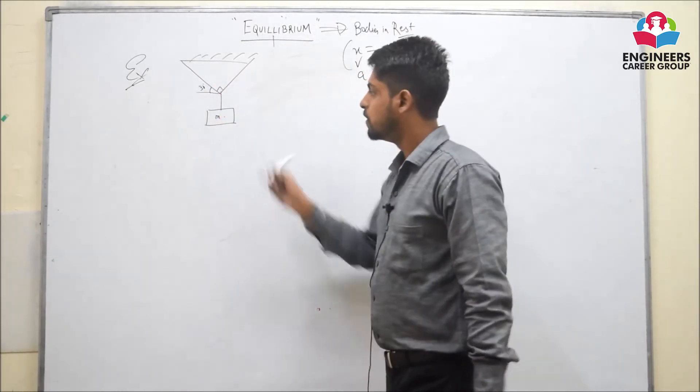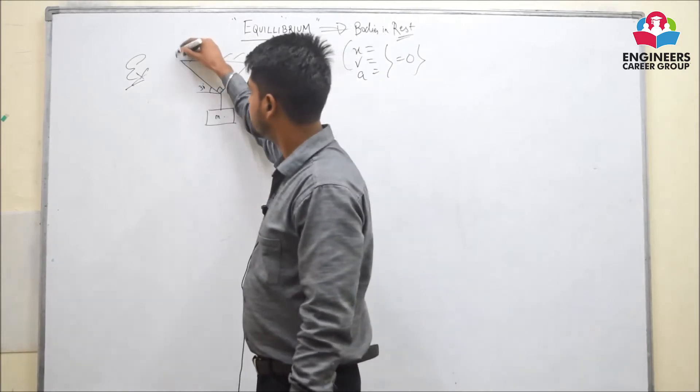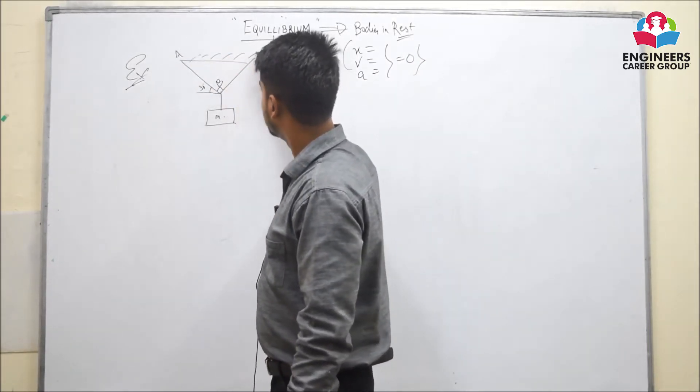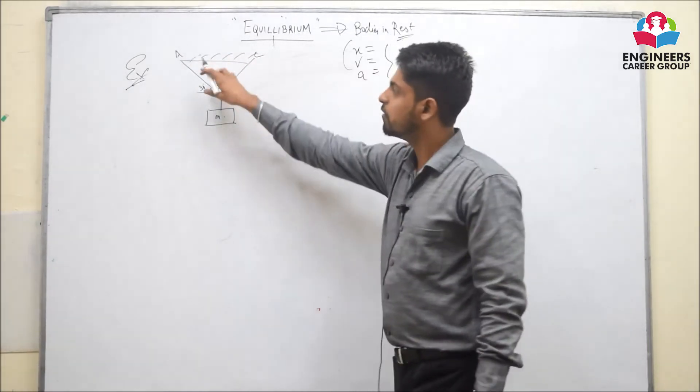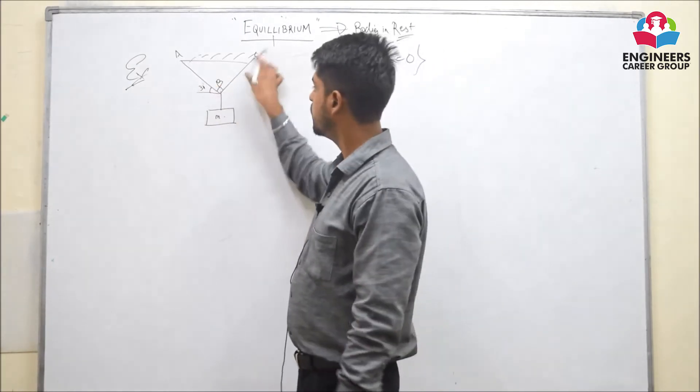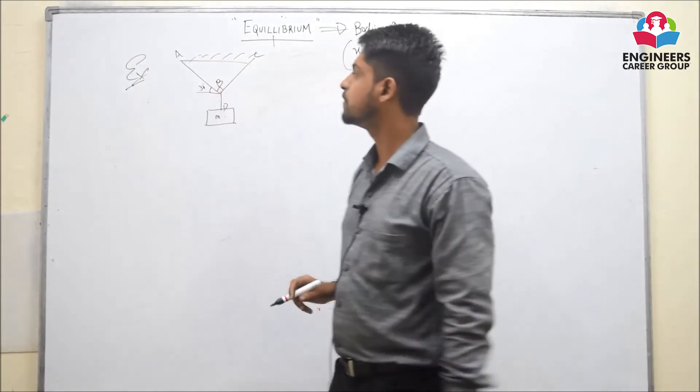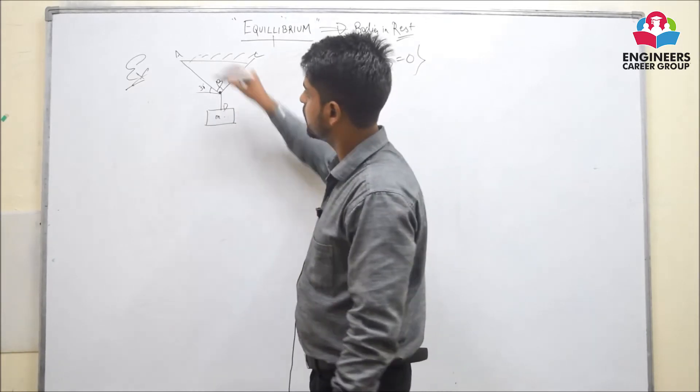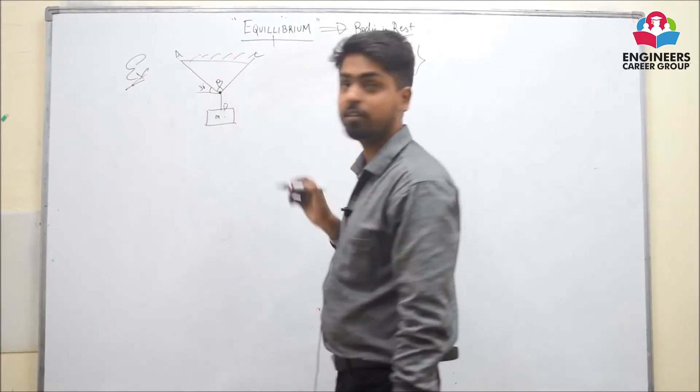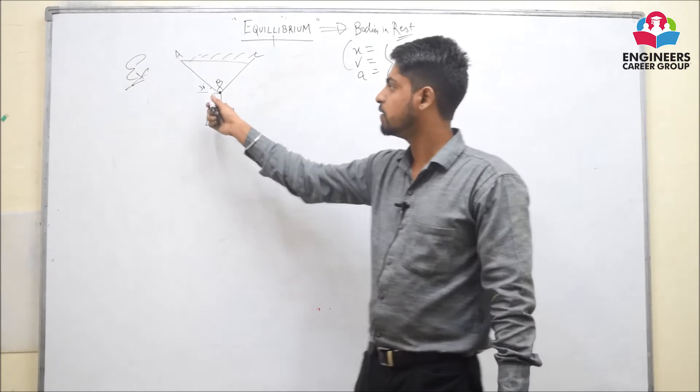Let us take this example. This is a body of mass M which is hanging with the help of three strings AB, BC and BD.